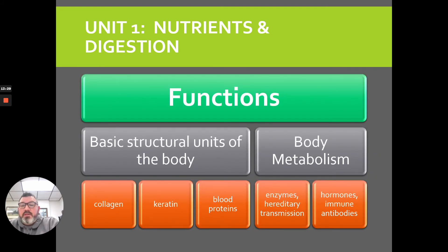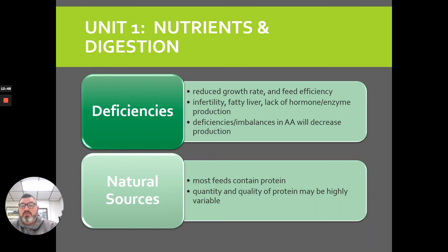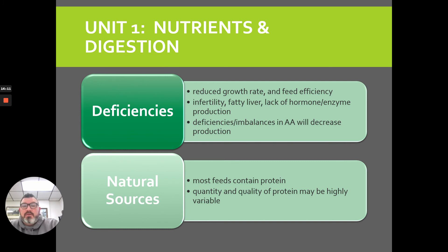Functions of protein: first, they are the basic structural units of the body — helping with collagen, keratin, and blood proteins. They help with body metabolism, making enzymes, transmitting genetics, making hormones, and producing immune antibodies. You will easily see when there's a protein deficiency because growth rates are reduced, feed efficiency is reduced, lack of fertility occurs, fatty livers happen, and there is low hormone and enzyme production. Deficiencies or imbalances in amino acids can also decrease or limit production.